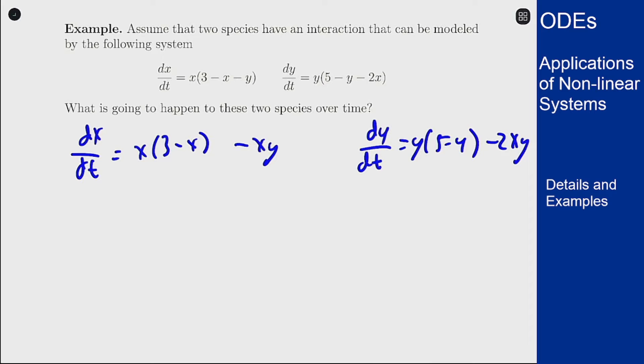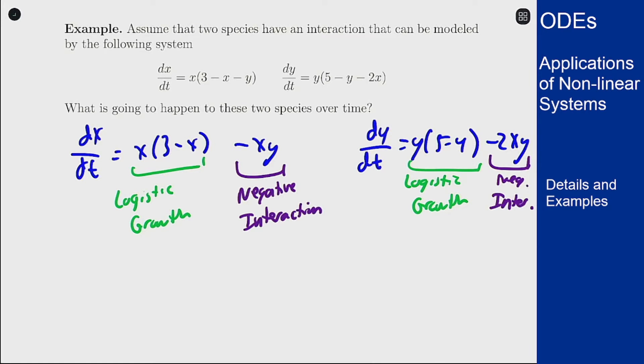So this setup shows that we have logistic growth for each population and a negative interaction term in both cases. So that tells we're in a competing species situation. They're fighting for resources, they're fighting for anything in the environment because the population of each of them decreases the rate at which the other one grows.